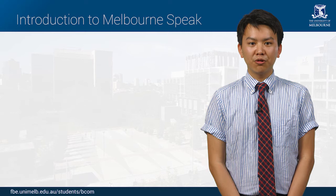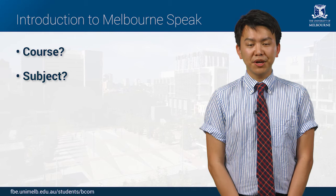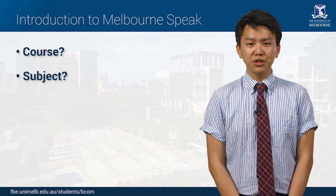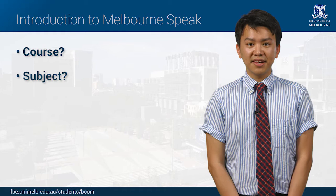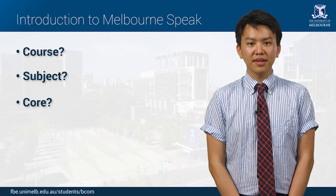During your time at university you will hear a lot of terms you may not be familiar with, and this is what we call Melbourne speak. At Melbourne, when we talk about a course we mean the Bachelor of Commerce, or the BCom as we often call it, not a subject. A typical subject in the BCom is one semester long and is worth 12.5 credit points. In total you will take 24 subjects in your BCom completing 300 points, unless you have been granted advanced standing. You'll study several compulsory subjects that everyone in the BCom completes, such as introductory microeconomics and organisational behaviour. These are core subjects.